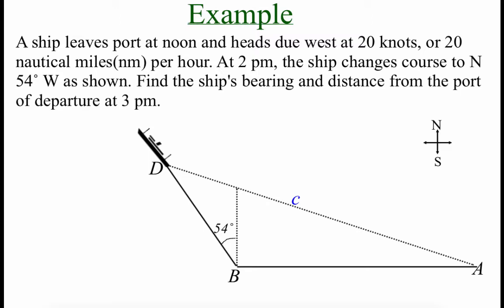In this example we're going to track the movement of a ship and eventually find its bearing. A ship leaves port at noon heading due west at 20 knots (20 nautical miles per hour). At 2 p.m. the ship changes direction and starts heading N54°W, as shown in our picture. We're going to find the ship's bearing and distance from port at 3 p.m.